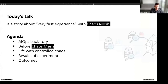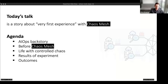I decided to reframe it as a story about very first experience with Chaos Mesh. I will talk about AIOps and the backstory behind that, why we wanted to try something from AIOps, describe our life before we discovered Chaos Mesh and how we invented our own version, and then how to live with controlled chaos in your life, our services and microservices. Because it's all about experiments, I will share some results — how our platform detects different issues using Chaos Mesh — and finally, some outcomes and takeaways.